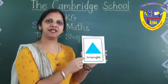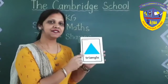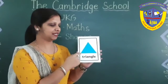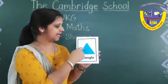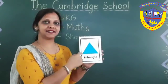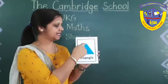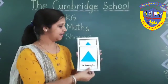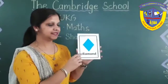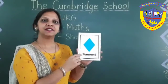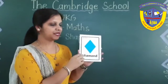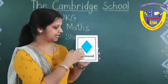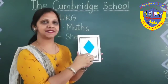Next shape is triangle. Triangle has three sides. And next is diamond. Diamond has four sides.